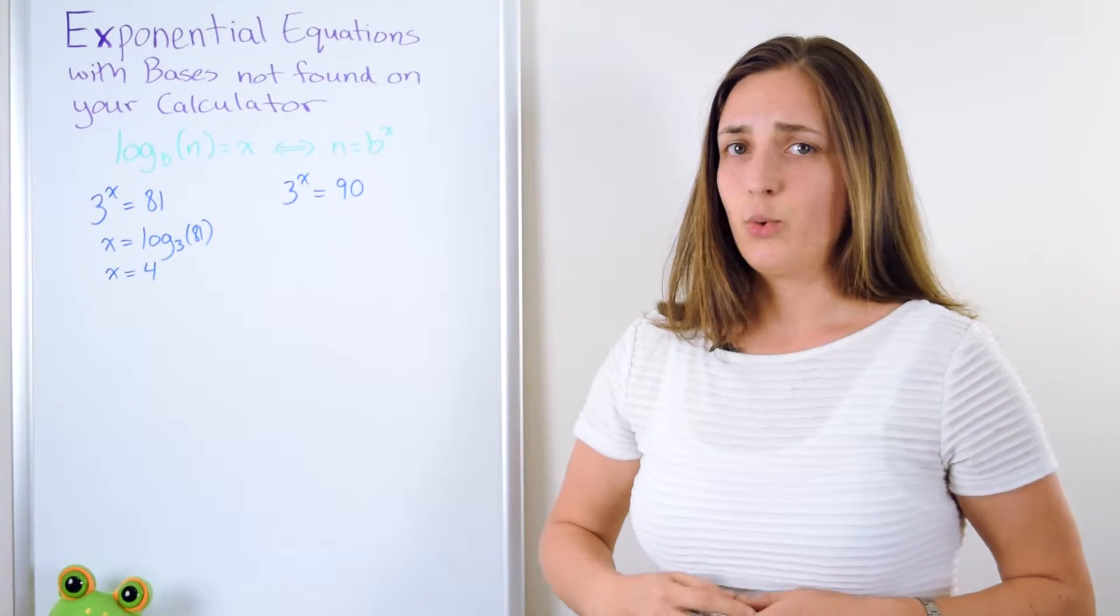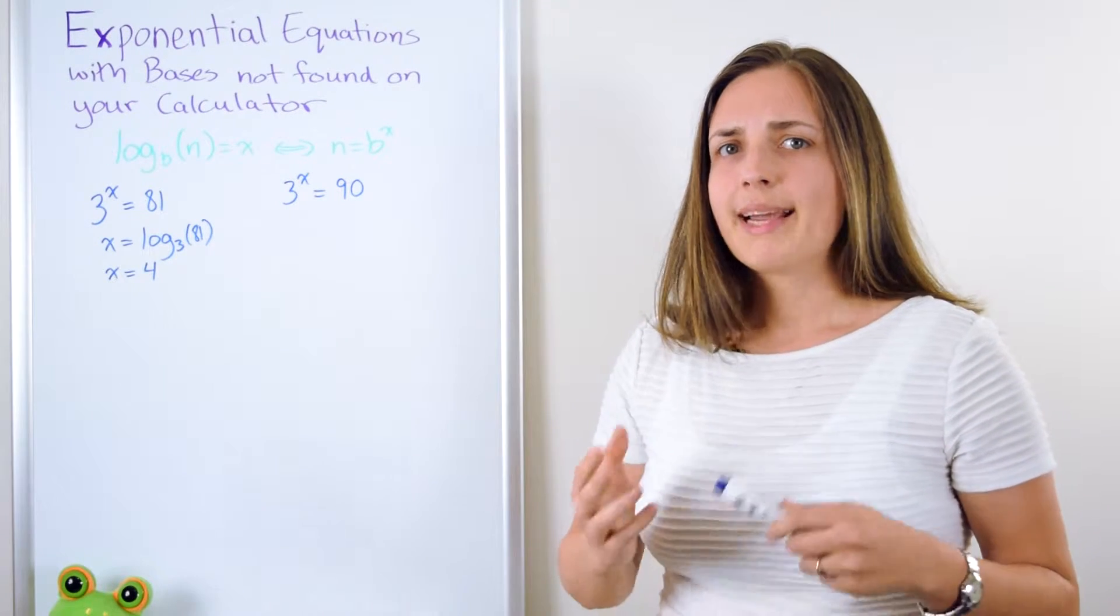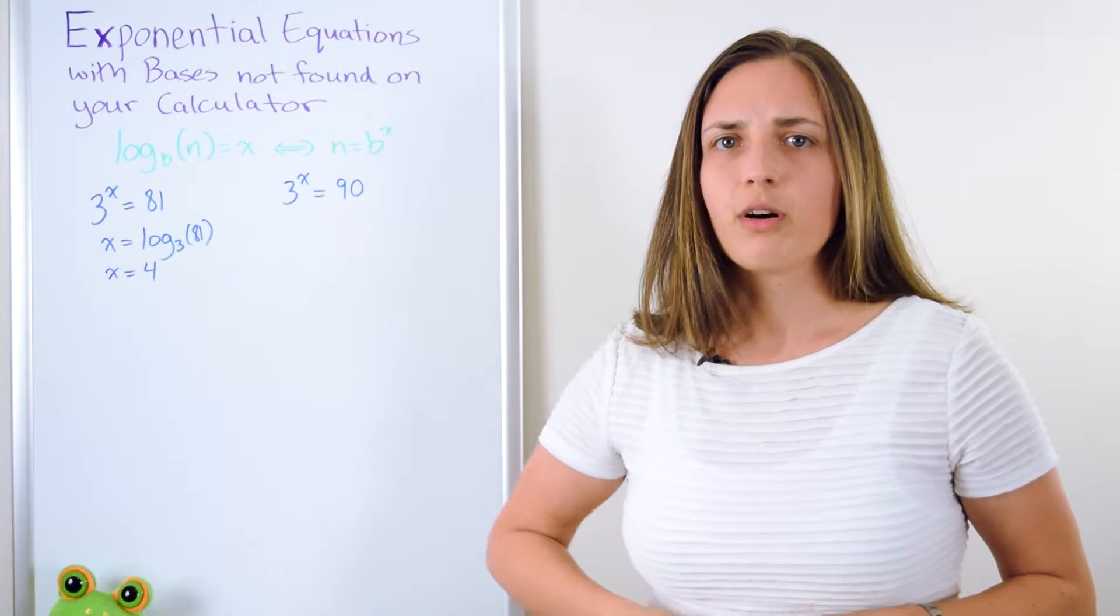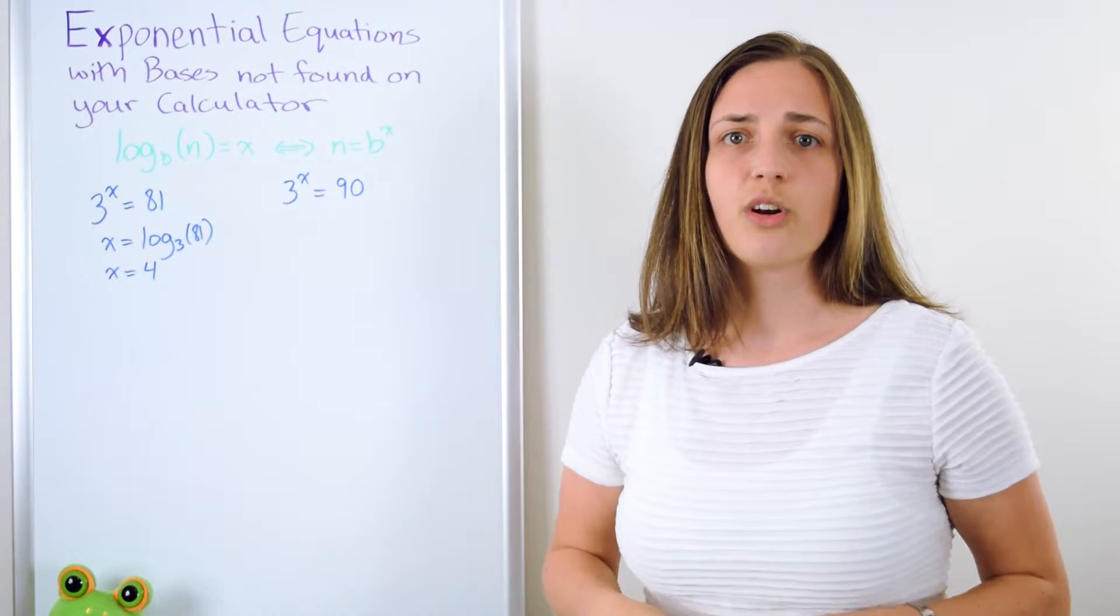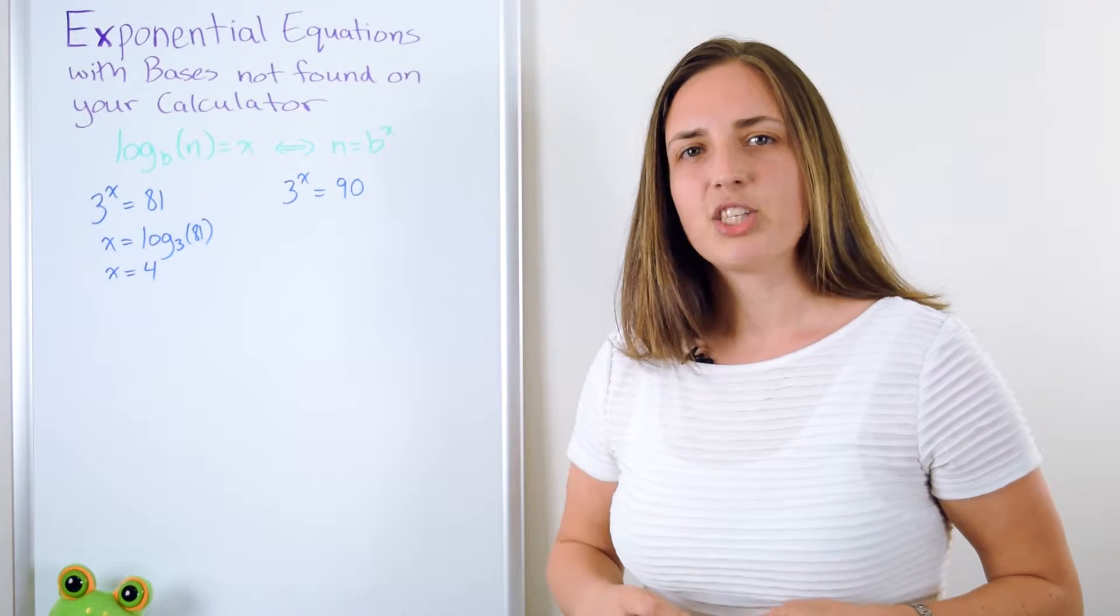Let's say 3 to the power of x equals 90. Now I know my answer should be a little bit bigger than 4 because if the right hand side was 81, the answer would have been 4. But I don't know how much bigger.